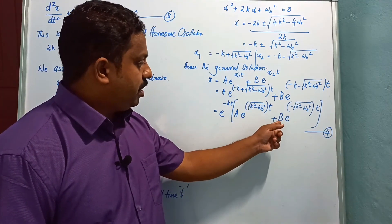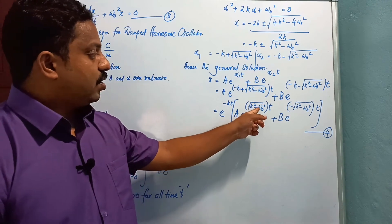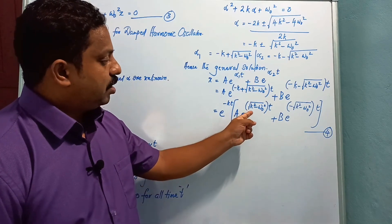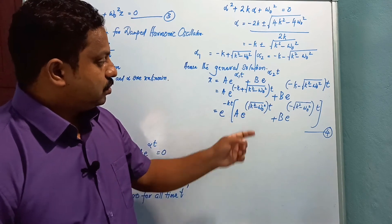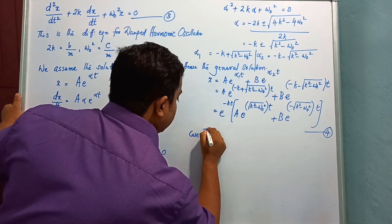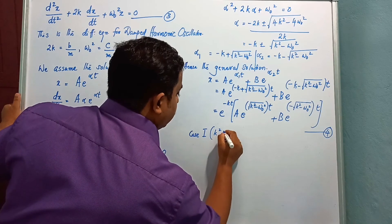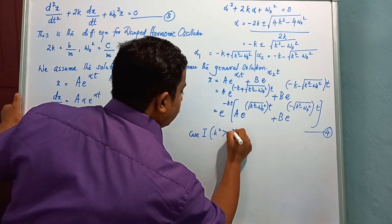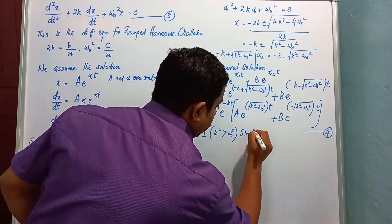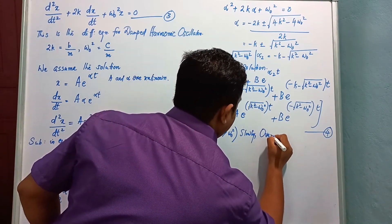Here A and B are constants whose values depend on the initial conditions. Depending on the values of k and ω₀, there are three cases in which a displaced body can return to the equilibrium position. Case 1: when k² > ω₀², the process is slow — this is called the over-damped case.